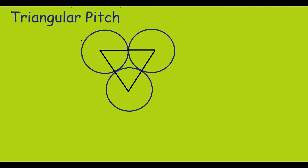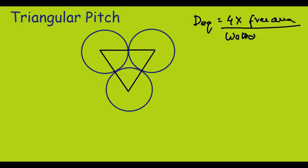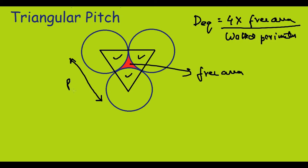Now we will do the same calculation for triangular pitch. We need to find the free area. The red portion in the middle is the free area. To calculate it, we find the area of this entire equilateral triangle and subtract the circular pieces. The side of the triangle is Pt, the diameter of the circles is DO, and the area of the equilateral triangle is (√3/4)Pt².